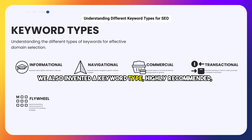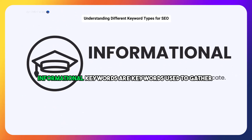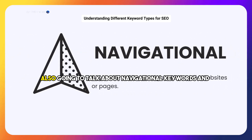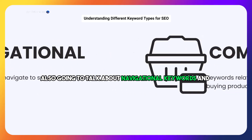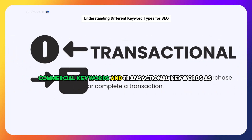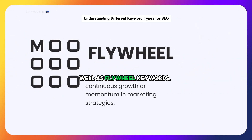We also invented a keyword type called flywheel keywords — highly recommended — that we use with all of our reputation SEO management clients. Informational keywords are keywords used to gather information. We're also going to talk about navigational keywords, commercial keywords, transactional keywords, as well as flywheel keywords.